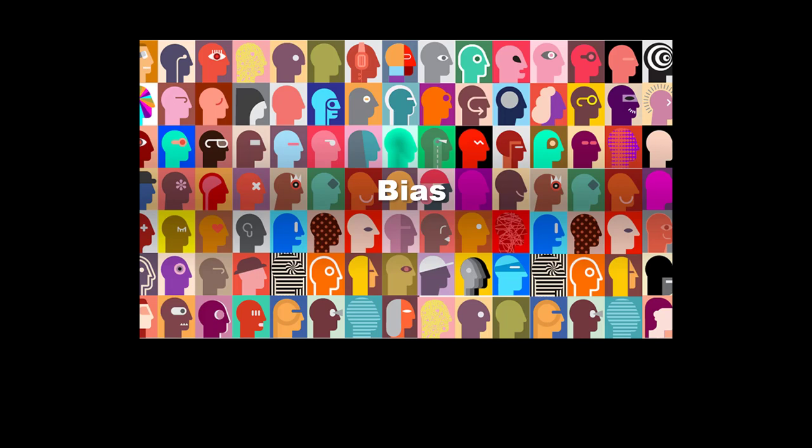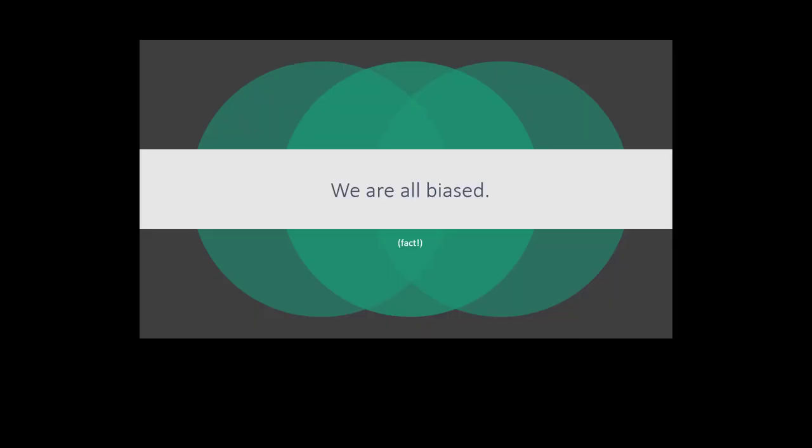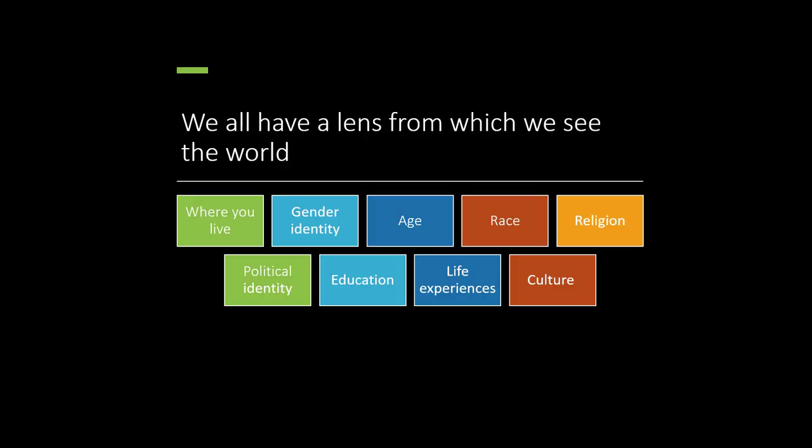What did you learn from taking some of the Project Implicit tests? Did you find that there were some blind spots you didn't know you had before? The first thing we all need to accept is that as human beings we are all biased, and our biases are just part of our lens in how we see the world.